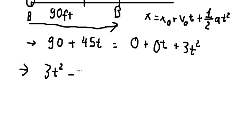So we can put 3t squared minus 45t minus 90 equals to zero. And this is the equation we need to find.